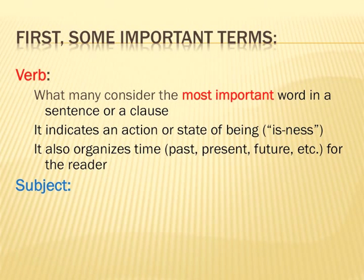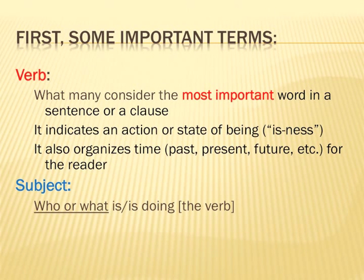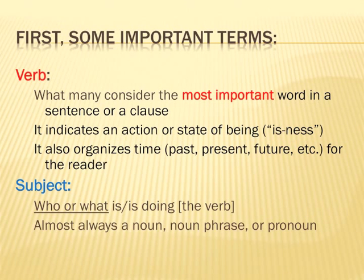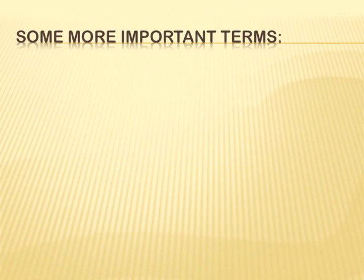The next term is subject. We want to know what the sentence is about. The subject is the who or the what that is or is doing the verb. It's almost always a noun, a noun phrase, or a pronoun. I can't think of the subject as being anything else, though some writer somewhere may come up with a sentence that has something else acting as the subject.